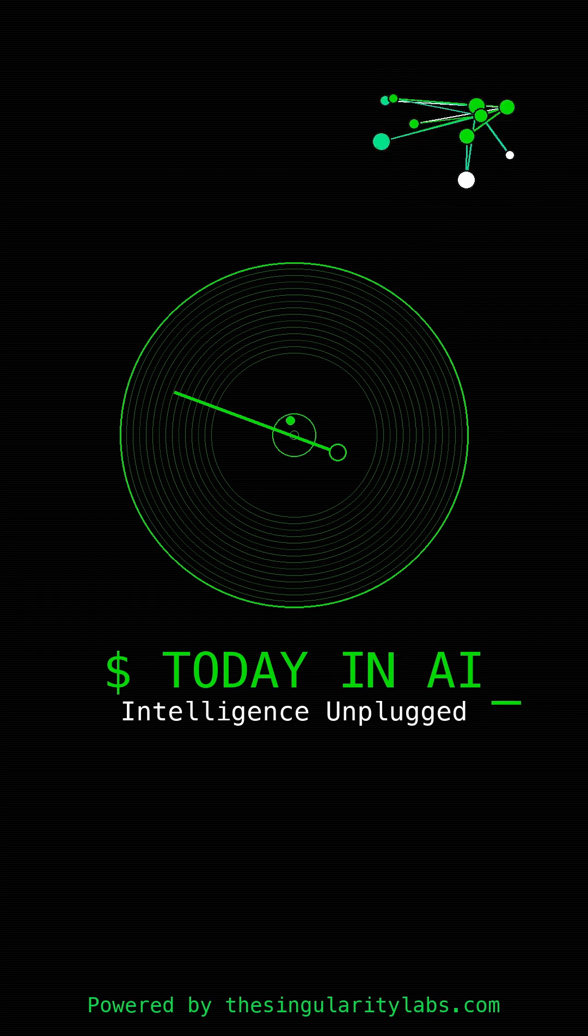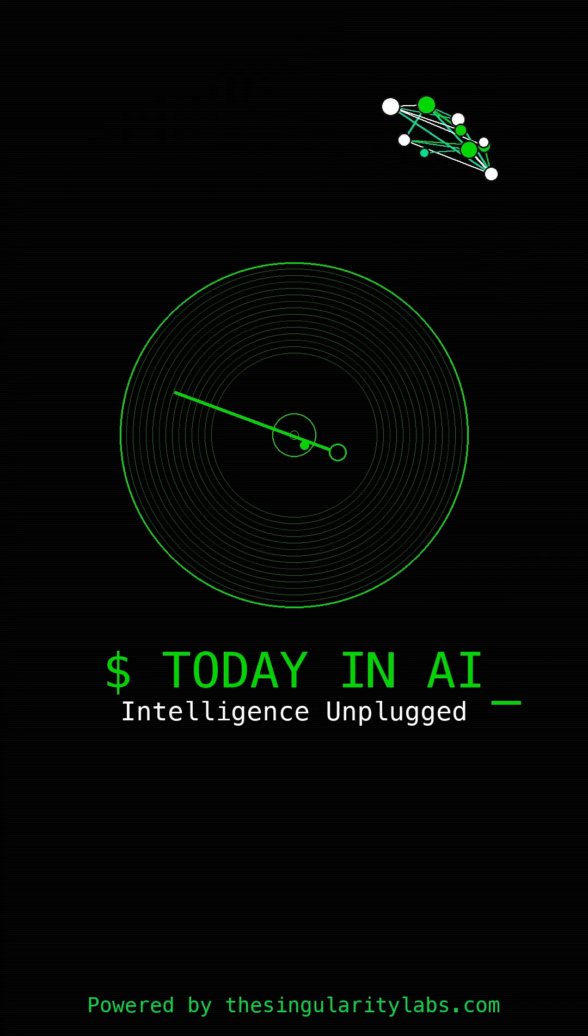IBM rises on Anthropic partnership for AI-aided software coding. IBM shares jumped in pre-market trading after the company announced a plan to integrate Anthropic's artificial intelligence technologies into its software solutions.